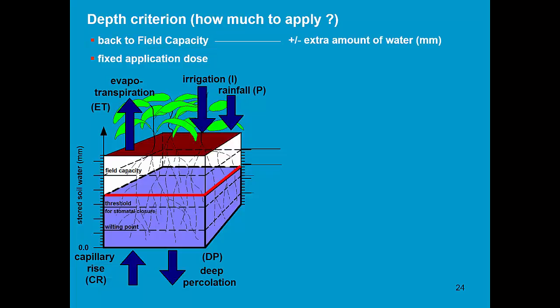In AquaCrop we can even specify that an extra amount of water has to be added, for example to leach salts out of the root zone. Or even that you don't go exactly back to field capacity, but remain a certain amount below field capacity, for example 10 mm, to take into account rain in the next day.